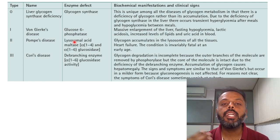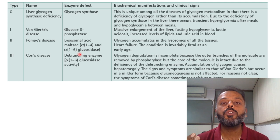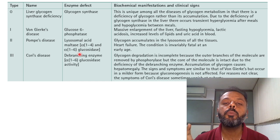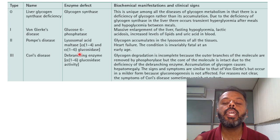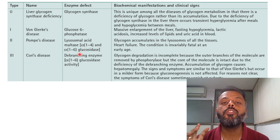Type 3 is known as Cori's disease, Forbes disease, or limit dextrinosis, characterized by deficiency of the debranching enzyme. Because of this deficiency, glycogen degradation is incomplete — the outer branches are removed by phosphorylase enzyme, but the inner core remains intact. This abnormal glycogen accumulates in the liver, leading to hepatomegaly. Other features are similar to Von Gierke's disease but in a milder form, and abnormal glycogen accumulates.